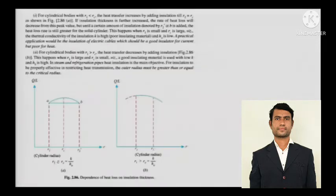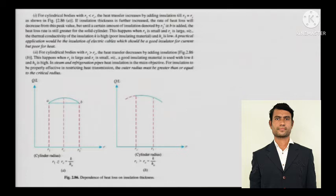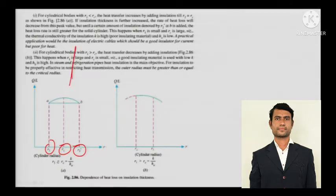For cylindrical bodies with r1 less than rc (critical radius of insulation), the heat transfer increases by adding insulation until r2 equals rc, where r2 is the outer radius. If insulation thickness is further increased, the rate of heat loss decreases from its peak value. For cylindrical bodies with r1 greater than rc, the heat transfer decreases by adding insulation — this happens when r1 is large and rc is small.